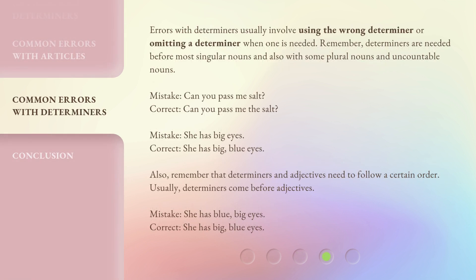Errors with determiners usually involve using the wrong determiner or omitting a determiner when one is needed. Remember, determiners are needed before most singular nouns and also with some plural nouns and uncountable nouns. Mistake: Can you pass me salt? Correct: Can you pass me the salt? Also, remember that determiners and adjectives need to follow a certain order — determiners come before adjectives. Mistake: She has blue, big eyes. Correct: She has big, blue eyes.